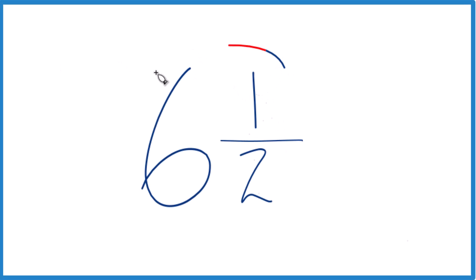Let's take the mixed number 6 and 1 half and write that as an improper fraction. Here's how we do it.